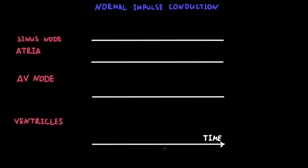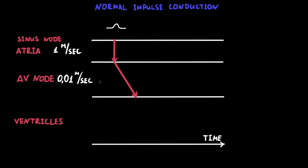Let's schematically draw how the normal impulse travels through the heart. The impulse goes out from the sinus node and passes through the atria — we see it as a P-wave on ECG. The conduction speed is 1 meter per second, which occurs almost instantly, so we draw a vertical line. In the AV node, conduction speed is 100 times lower than in the atria; as a result, the impulse needs more time passing through the AV node, so the line is inclined. On ECG, this is represented by the PQ segment.